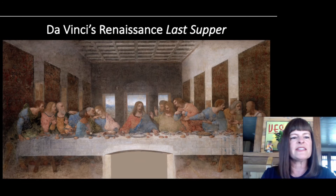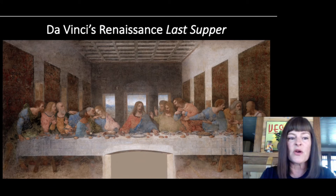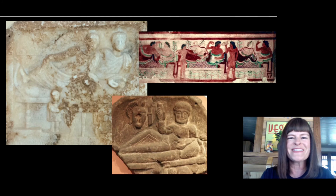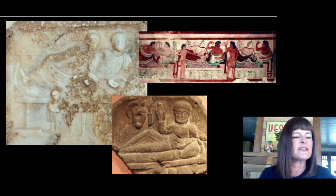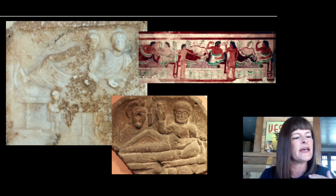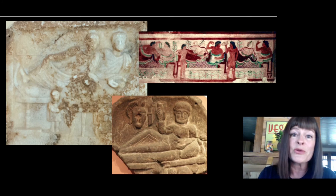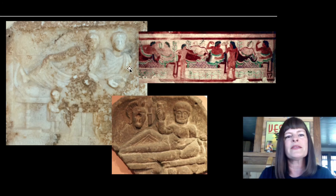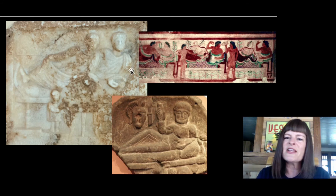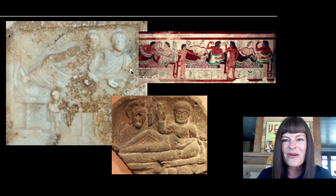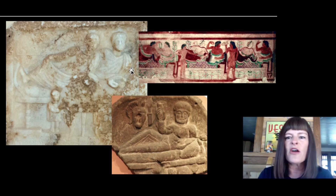Another interesting thing about the context of this painting is the banqueting scene itself. The apostles and Jesus are all seated at the table, but in the ancient world, banqueting occurred while reclining. This holds up with the text too — Luke describes Jesus and his disciples reclining at the table, and in John, John leans his head back against Jesus to ask who is going to betray them. These examples from the Greco-Roman world show that banqueting took place in a reclined situation — another notable difference from da Vinci's depiction.